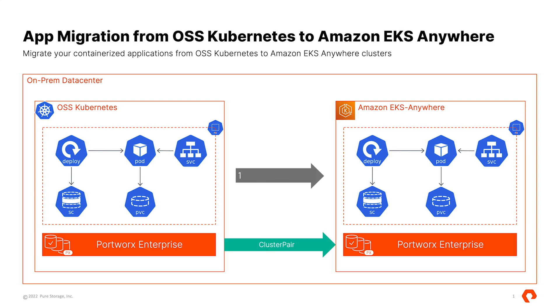Once the migration is done successfully, you will have an exact replica of your application running on your destination or Amazon EKS Anywhere cluster. That's the first scenario where both clusters are running on-prem.